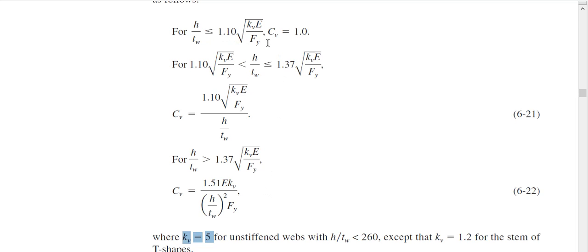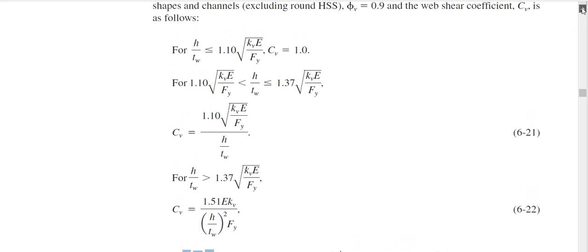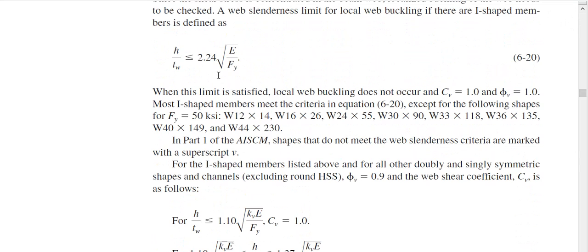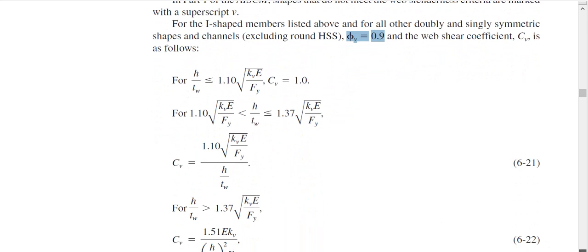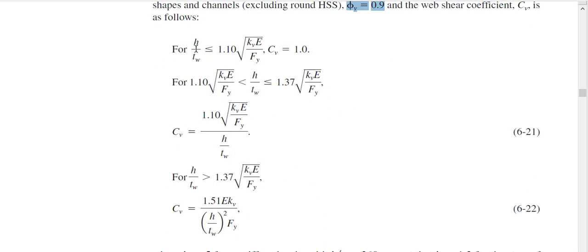Now you can see, if your section does not satisfy this equation, you have to find phi V and Cv. How to find phi V? Phi V is 0.9 if it doesn't satisfy. If it satisfies, then 1. Cv is 1 if it satisfies. If it doesn't satisfy, you have to come here to find it. So based on your condition, you might be here, you might be here, or you might be here. Wherever your case is, you can find your Cv. So this is the way to find Cv.